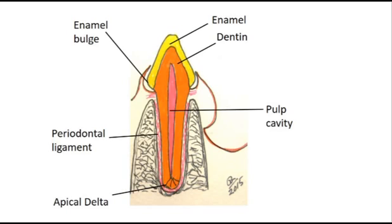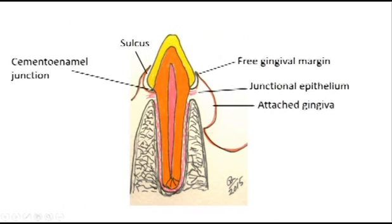Between the root and the surrounding bone is the very strong periodontal ligament, which attaches the root to the bone. Now let's look at the gums. The gums are attached to the tooth by the junctional epithelium at the cemento-enamel junction. They go up to a very thin flap all the way around the crown, and this flap is not attached to the enamel.